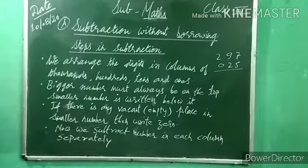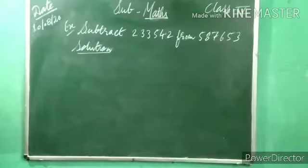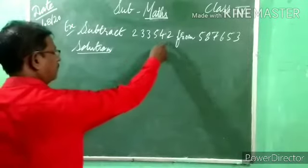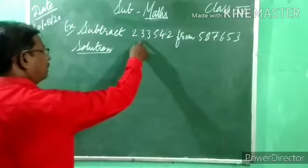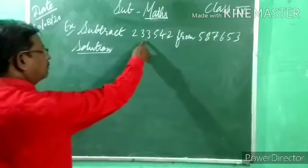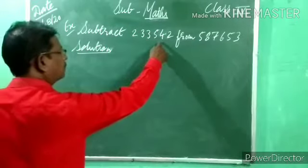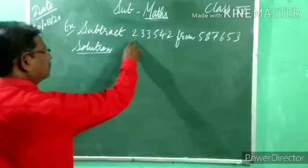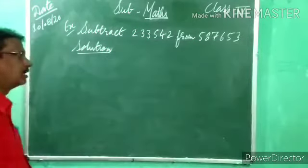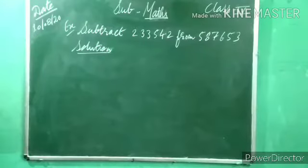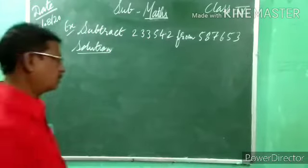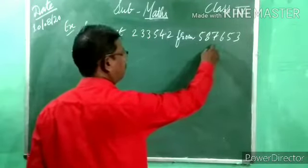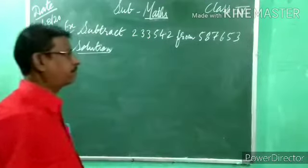Note down this. Now example: subtract 1,33,542 from 5,87,653. This is a 6-digit number — 1 lakh, 10,000, and so on.